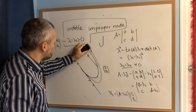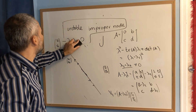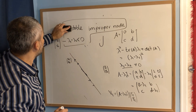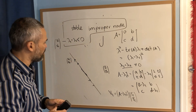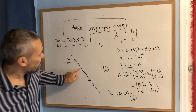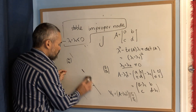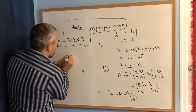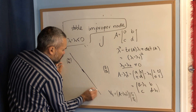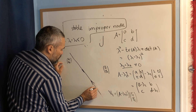The other case is very similar. Now assume that λ₁ is less than zero. We call this a stable improper node. We find the eigenvector and draw the lines, but since λ₁ is less than zero, the arrows go toward the origin.